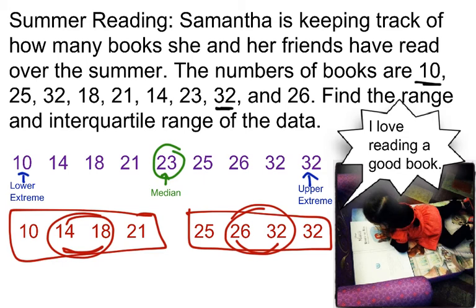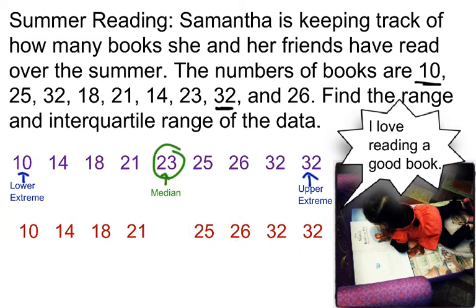Let's find those numbers. In this case, we don't have one number in the middle — remember, we're excluding that median we had before, but I'm not excluding the extremes. I have two numbers in the middle for my lower quartile.